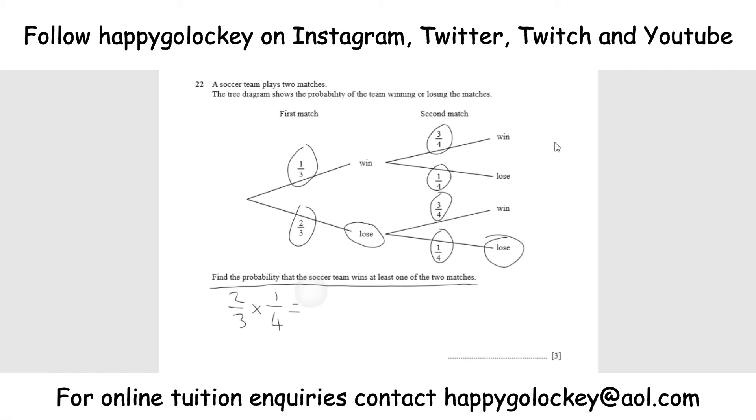To multiply fractions, you just multiply the top, multiply the bottom. So there's a two-twelfths or one-sixth chance that we lose both games.